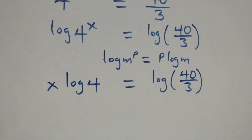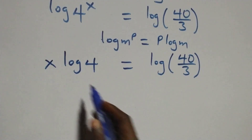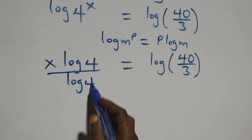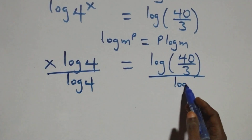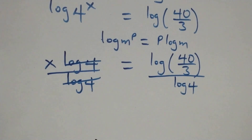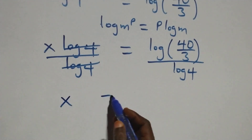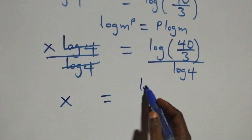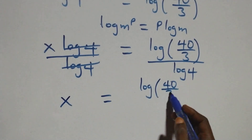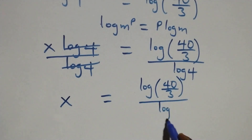Then from here, we divide both sides by log 4. We divide this side by log 4 and also divide this side by log 4, which implies log 4 cancels each other. What we have becomes x equals to log(40/3) divided by log 4.